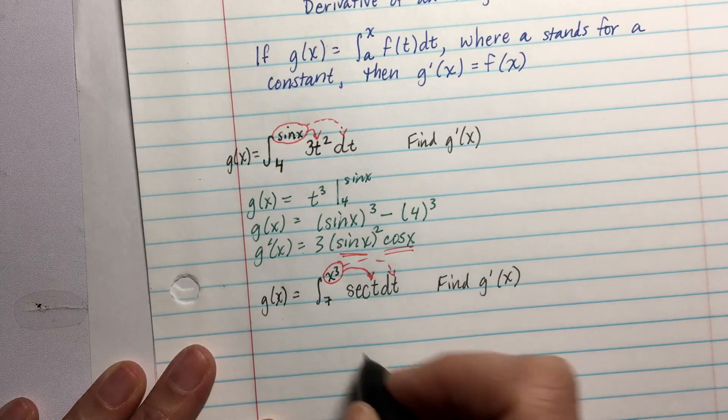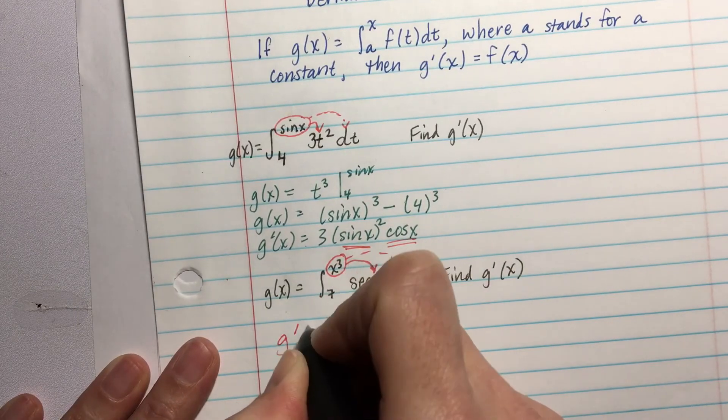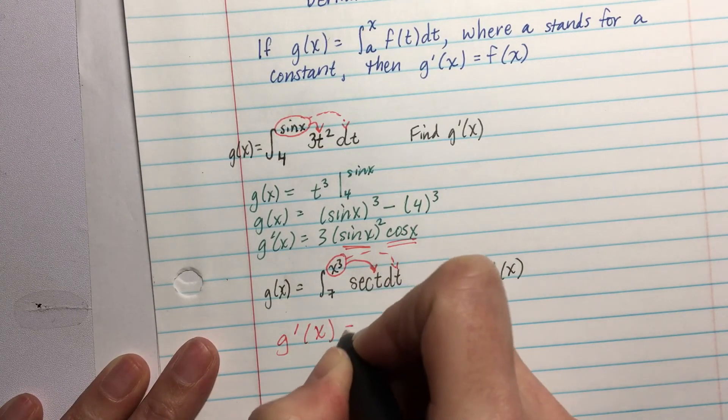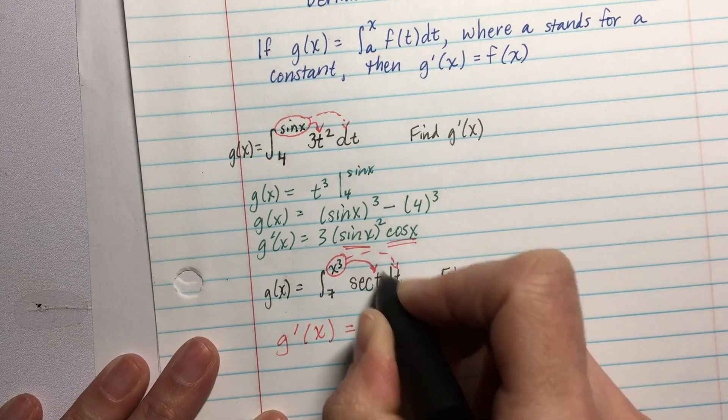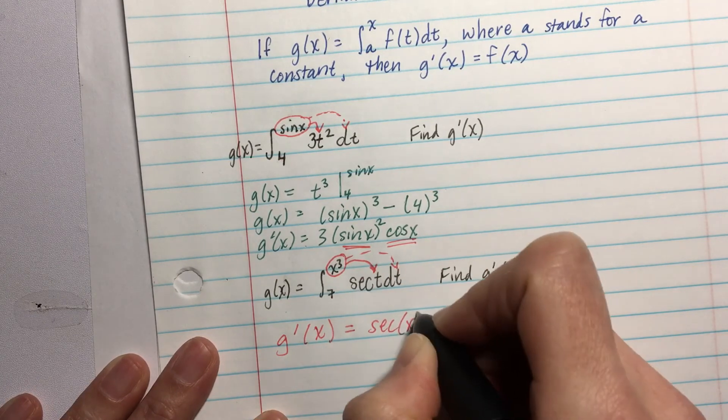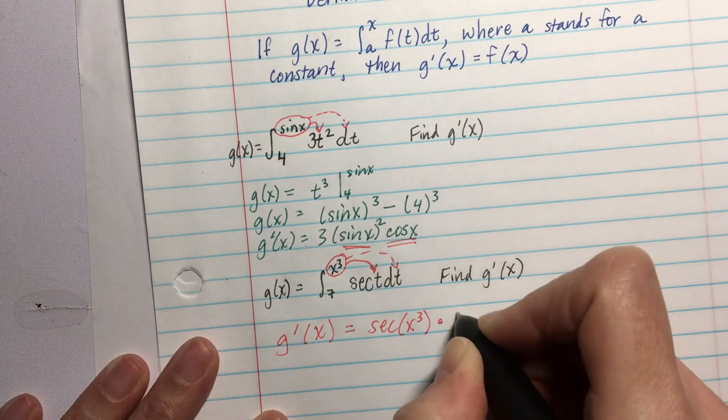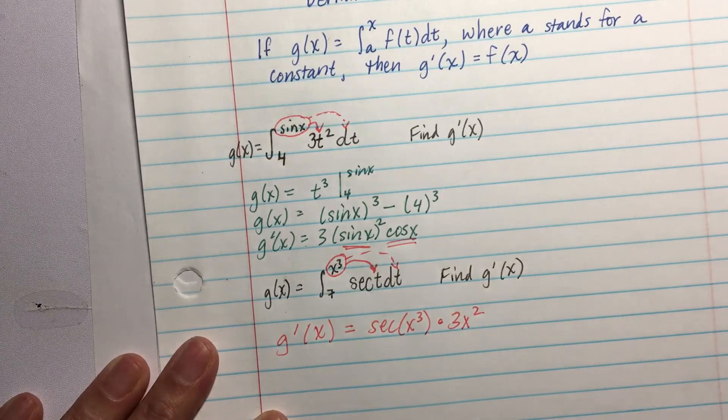we'll plug the derivative of it in for dt. So g'(x) is sec of, plug that x³ in for t, and then plug the derivative of it in for dt. And that's it.